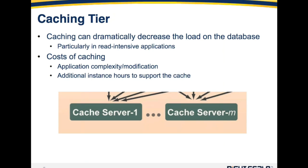Caching in its purest form can dramatically decrease the load on the database by caching data objects that the application servers are frequently accessing. This is particularly true in read-intensive applications, and in the vast majority of applications that WriteScale has been exposed to, read-to-write ratios are generally very high. Five to one is very common, and we've even seen 20 and sometimes even 50 to one.